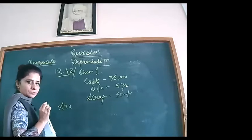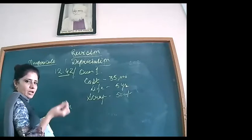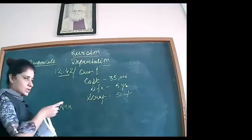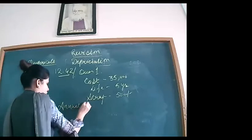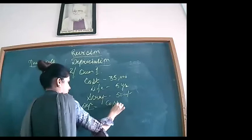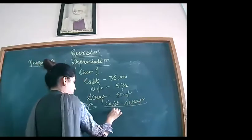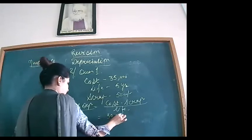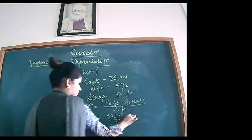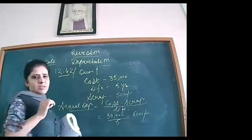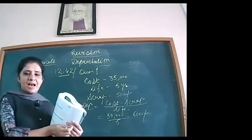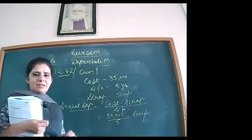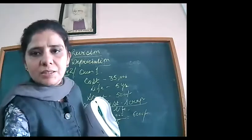This type of question can be asked in a paper for one mark. Annual depreciation = (Cost − Scrap Value) ÷ Life = (35,000 − 5,000) ÷ 5 = 30,000 ÷ 5 = ₹6,000 per year. In an MCQ, you will calculate this and tick the ₹6,000 option. That is the one-mark question.